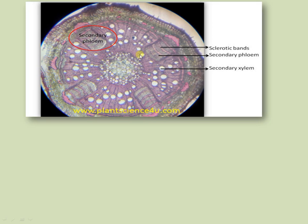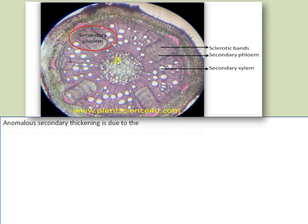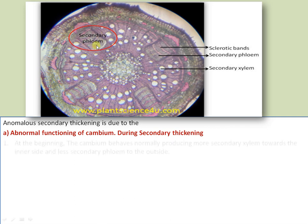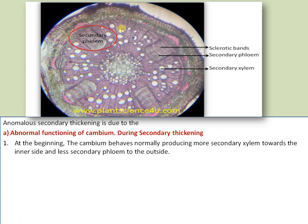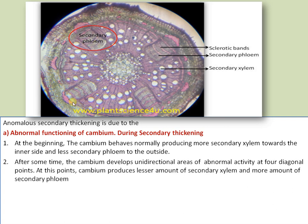Moving to the anomalous secondary thickening pattern in Bignonia: in this transverse section of Bignonia stem, you can see four regions or four diagonal points where there is the presence of secondary phloem. Anomalous secondary thickening is due to the abnormal function of cambium. During secondary thickening, the activity of cambium is normal at the beginning, producing more secondary xylem to the inside and less secondary phloem to the outside. But after some time, at four diagonal points, the production of secondary phloem increases towards the outside and less secondary xylem is produced inside.